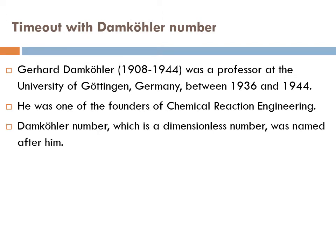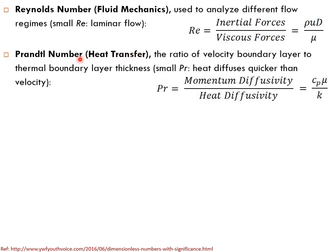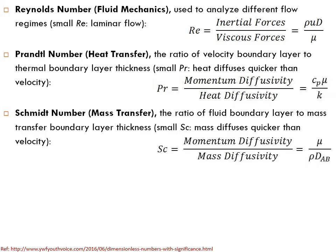The Damköhler number, which is a dimensionless number, was named after him. Examples of dimensionless numbers—can you recall some? I'm sure the first number that comes to your mind is Reynolds number. We use this in fluid mechanics. Reynolds number is a ratio between inertial forces and viscous forces. Then we have Prandtl number, used in heat transfer, which is a ratio between momentum diffusivity and heat diffusivity, and so on.